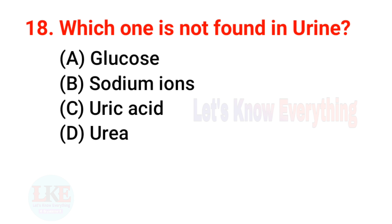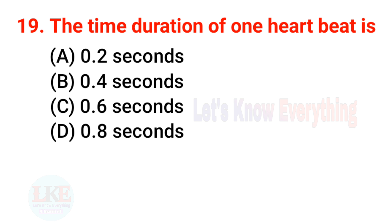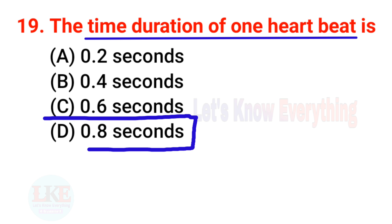Question number 18: which one is not found in urine? Right answer, option A: glucose. Question number 19: the time duration of one heartbeat is 0.8 seconds.